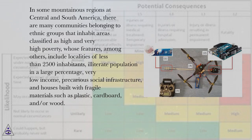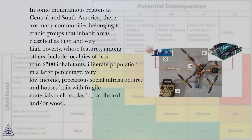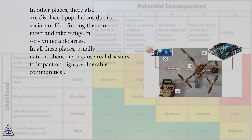In some mountainous regions of Central and South America, many communities belonging to ethnic groups inhabit areas classified as high and very high poverty. Their features include localities of fewer than 2,500 inhabitants, a large percentage of illiterate population, very low income, precarious social infrastructure, and houses built with fragile materials such as plastic, cardboard, or wood. There are also displaced populations due to social conflict, forcing them to take refuge in very vulnerable areas where natural phenomena cause real disasters impacting these highly vulnerable communities.